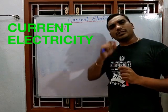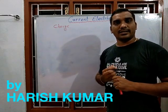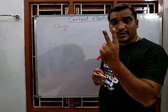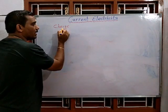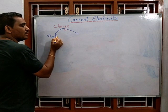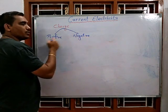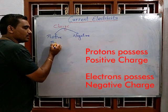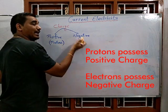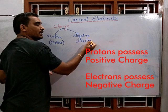Electricity is the main topic of charge and physical quantity. Charge is a physical entity which is of two types: positive charge and negative charge. Positive charge is of protons, and negative charge particles are electrons.